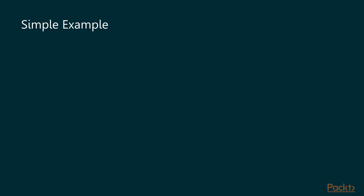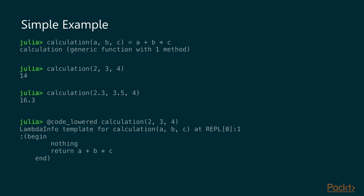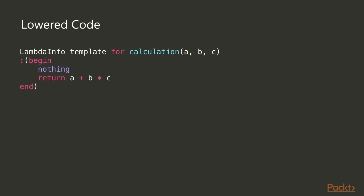We'll start with a simple example: a function called `calculation` doing some simple arithmetic with arguments a, b, and c. As you know, we can give it different kinds of numbers — integers or floating point — without writing different methods. For lowering we use the `@code_lowered` macro, and we have to specify our arguments because the result will vary depending on them. Julia generates a lambda info object containing some quoted code.